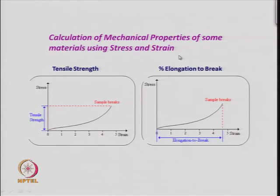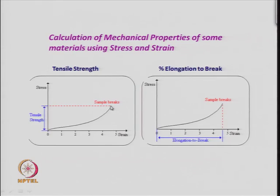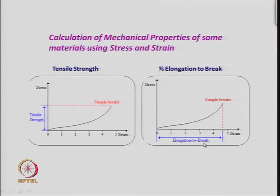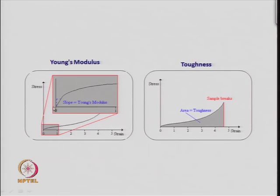For quantitative mechanical properties, stress-strain curves are typically measured. Stress is plotted against strain, and the maximum value of stress before the sample breaks is called the tensile strength. The maximum strain achieved before breaking is the elongation to break — how much elongation the material can undergo before fracture. The Young's modulus is obtained from the slope of the linear part of the stress-strain curve.